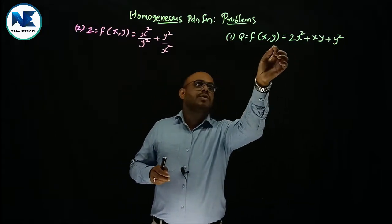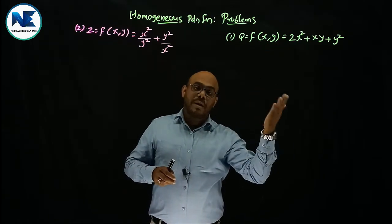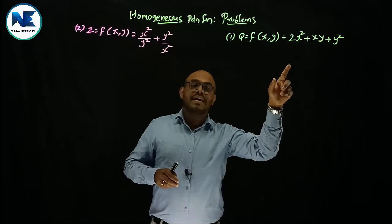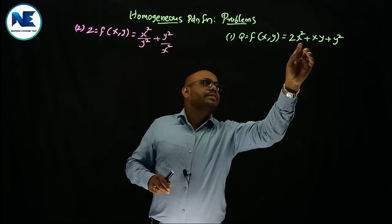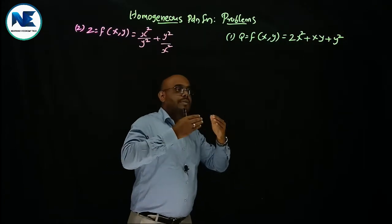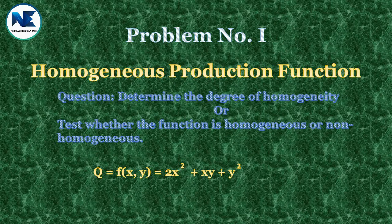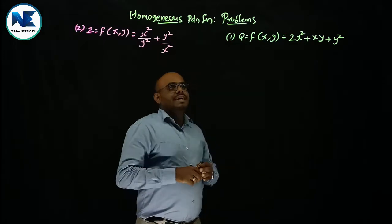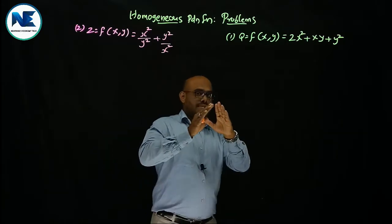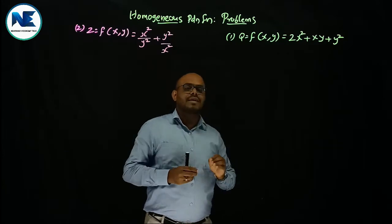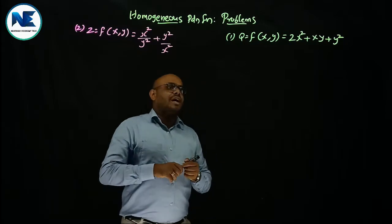This is a production function with two factors of production — two inputs, x and y — representing labor and capital, L and K. The production function is equal to x² + xy + y². The question may ask: determine the degree of homogeneity of this function, or test whether it is homogeneous or non-homogeneous.